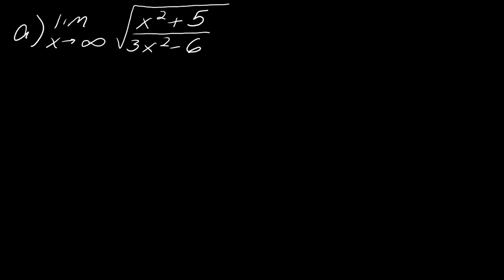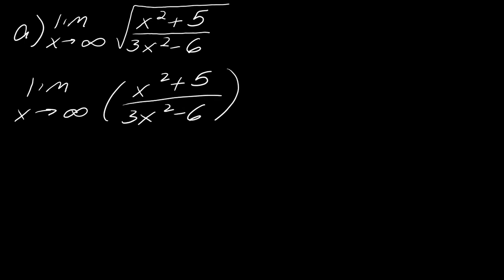Now I want to extend this idea to other examples. The first extended example is a square root over a rational expression. This is really no different than thinking of it with a rational exponent of one half. Any exponent on the outside isn't really going to have much bearing on the limit — you evaluate the exponent at the end. That follows from limit laws. So focusing on the inside, I need to divide everything by x squared. Pause here and try that, then we'll meet up.